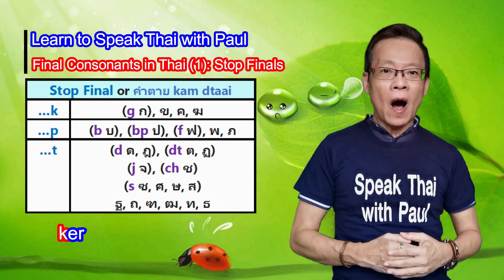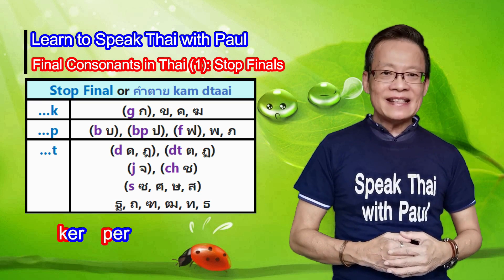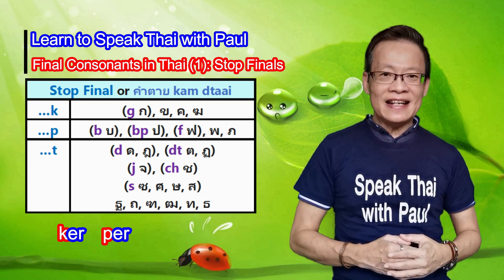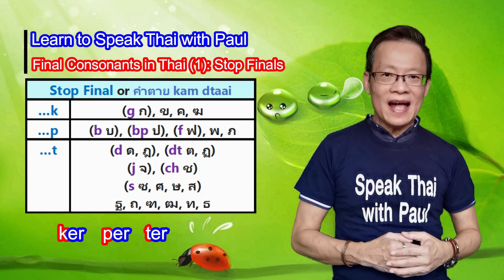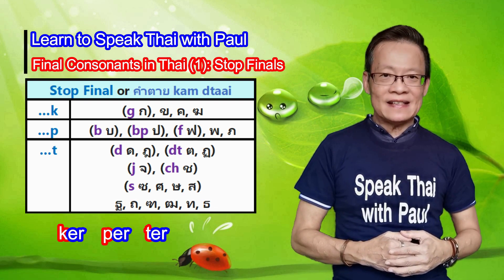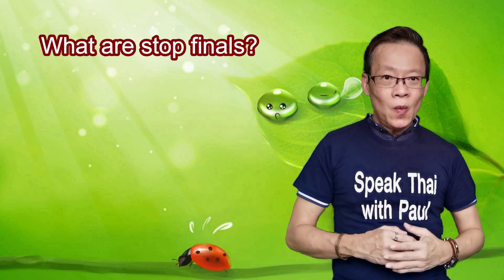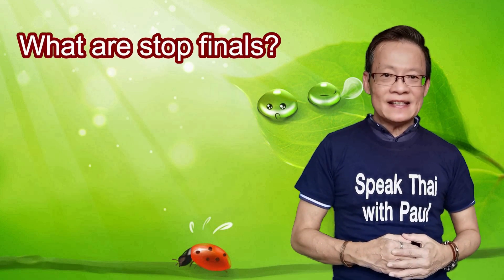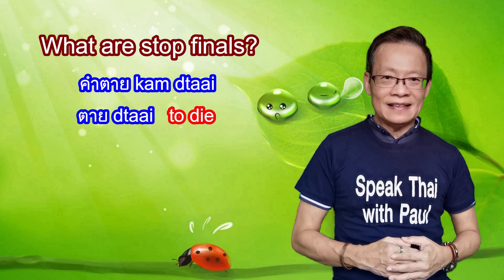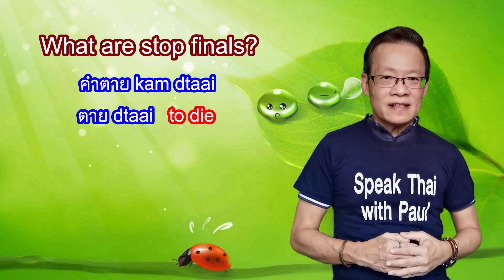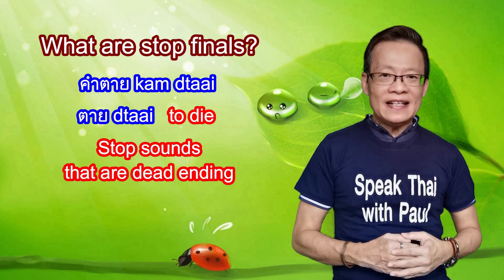The three stop finals are the K sound, P sound, and T sound. These three stop finals are commonly referred to as K, P, T stop finals. But what are stop finals, or kham tai? In Thai, 'tai' means to die. So stop finals are final sounds that are dead ending.